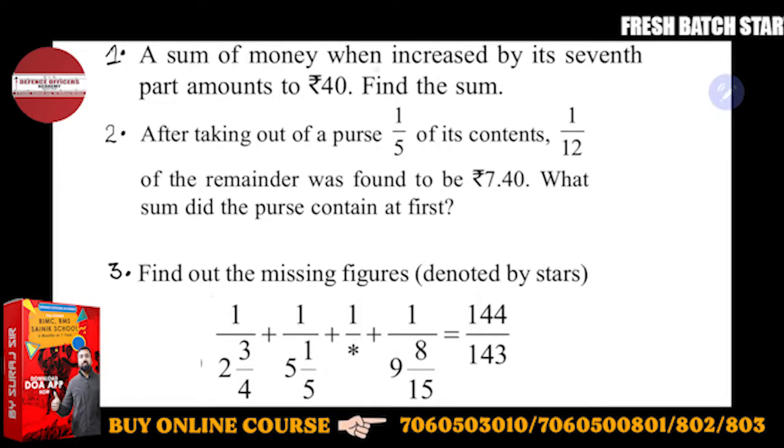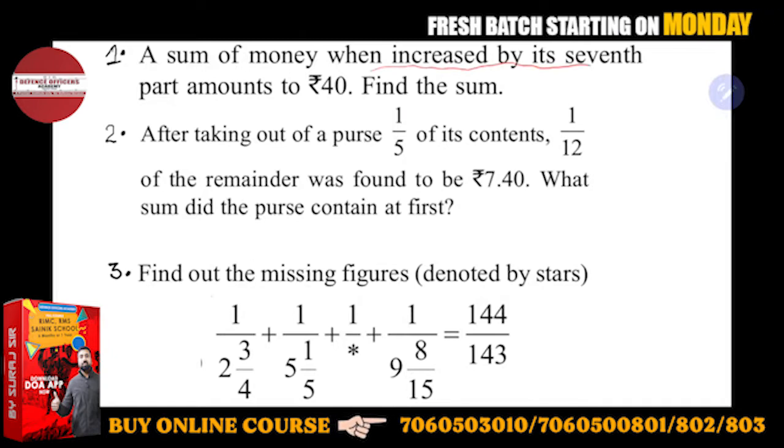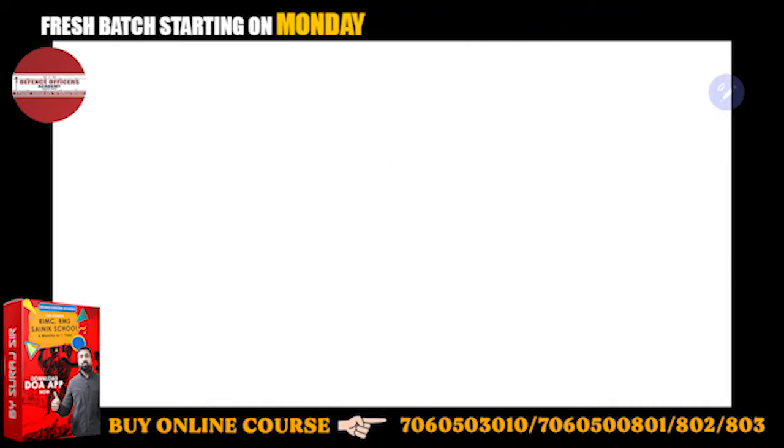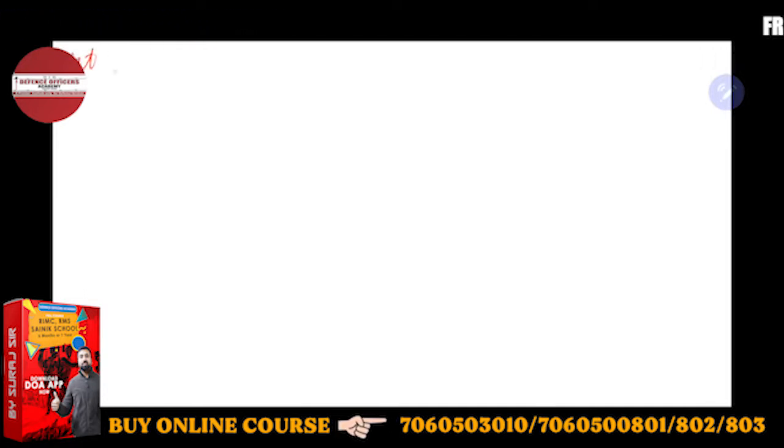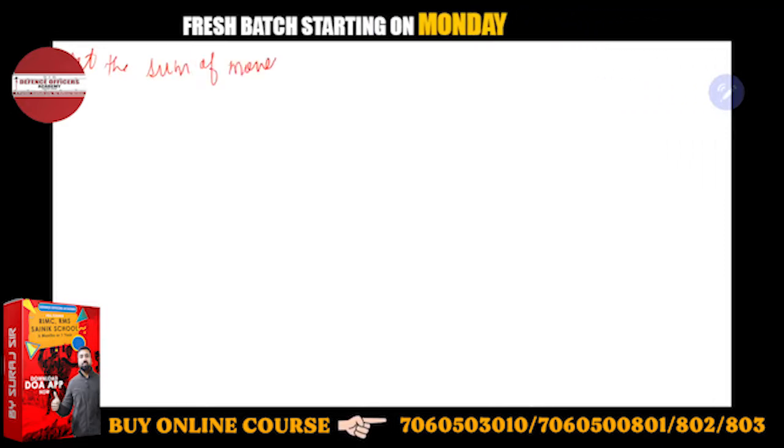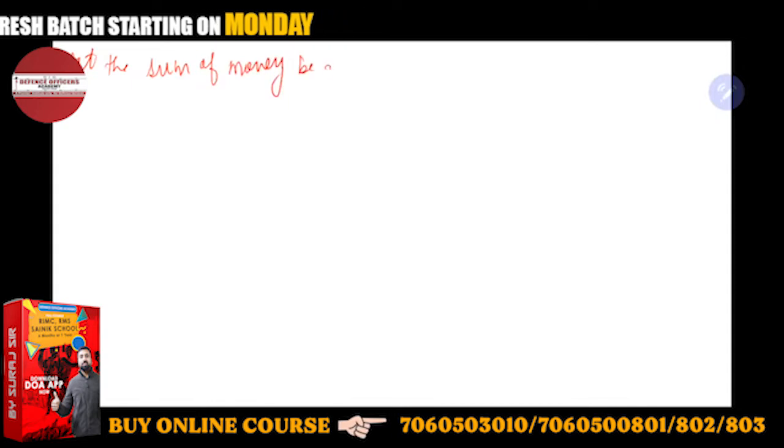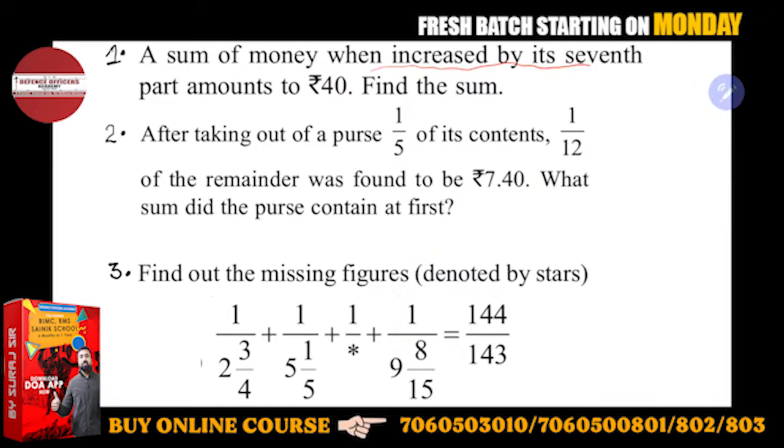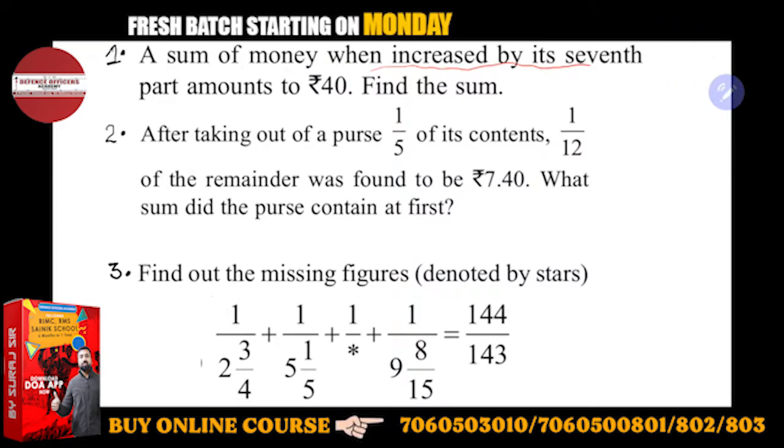The first question: the sum of money when increased by its seventh part. Let the sum of money be X. Sum of money you have taken as X. When it is increased by its seventh part...